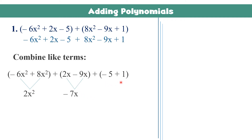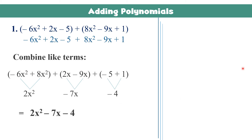For the constant terms, we have negative 5 and positive 1 — different signs again. Subtract and copy the sign of the larger number: 5 minus 1 gives 4, and it becomes negative 4. Then arrange in standard form. As you can see, they are already in standard form. Therefore the answer is 2x squared minus 7x minus 4.